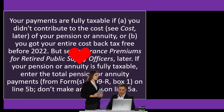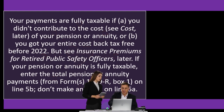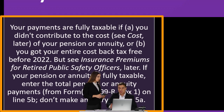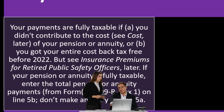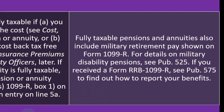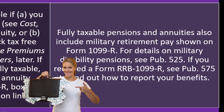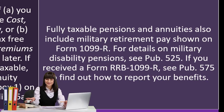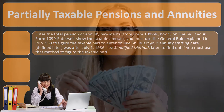Fully taxable pension and annuities: your payments are fully taxable if (A) you don't contribute to the cost of your pension or annuity, or (B) you got your entire cost back tax-free before 2022. If your pension or annuity is fully taxable, enter the total pension or annuity payment from Form 1099-R Box 1 on Line 5B — don't make an entry on Line 5A. Fully taxable pensions and annuities also include military retirement pay shown on Form 1099-R. For military disability pensions, see Publication 525.